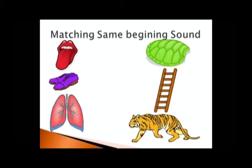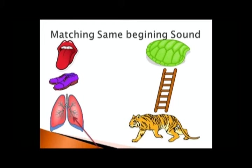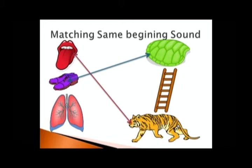Let us name the pictures: Tongue, Shoes, Lungs, Shell, Ladder, Tiger. Remember, we are matching the beginning sounds. To which picture would you match tongue? Tongue goes with tiger. To which picture would you match shoes? Shoes goes with shell. And the two last ones, of course, go together — lungs is matched with ladder.